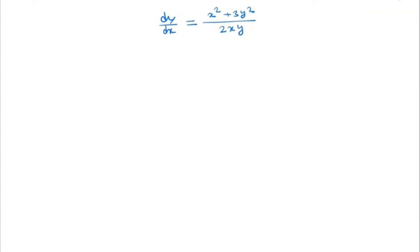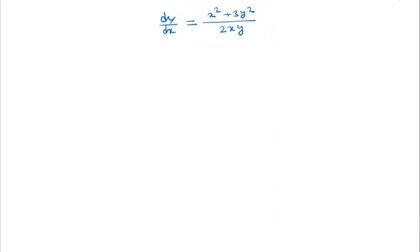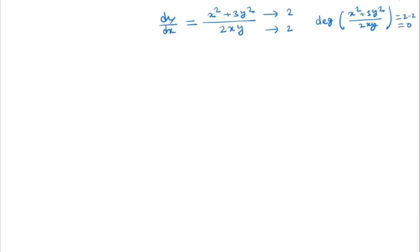Note that x squared plus 3y squared by 2xy is a homogeneous function. Because the degree of the numerator x squared plus 3y squared is 2, and the degree of 2xy is also 2. So the degree of the function is 2 minus 2, which is 0.